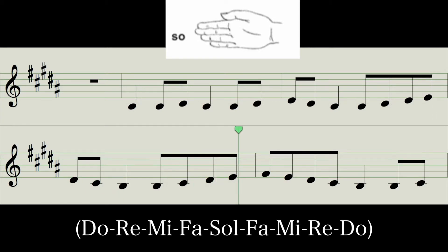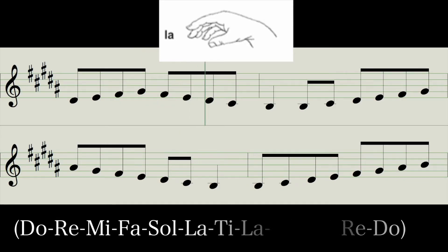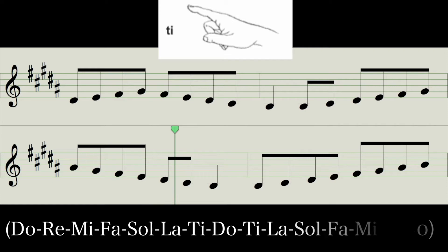Try and sing legato lines. Smooth and connected lines. Do, Re, Mi, Fa, Sol, La, Sol, Fa, Mi, Re, Do. Go all the way up.